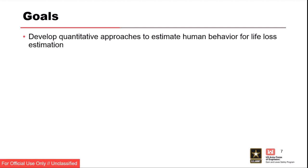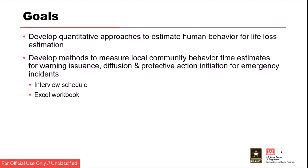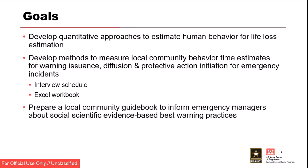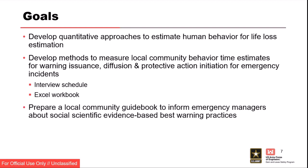Part of their work: come up with a way to quantify how we can estimate human behavior and how humans are going to respond during catastrophes. Help us understand those components and factors that influence the likelihood of response or non-compliance. Develop ways to measure local community behavior so we could put this into software, quantify it, and measure different outcomes across simulation. This resulted in an interview schedule and an Excel workbook, as well as a local community guidebook that we'll distribute to this group.